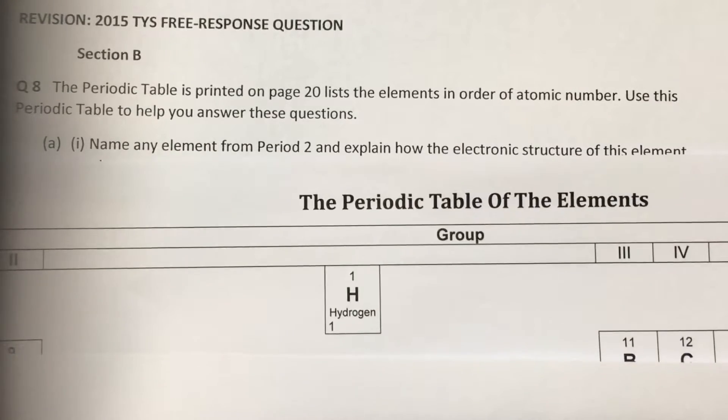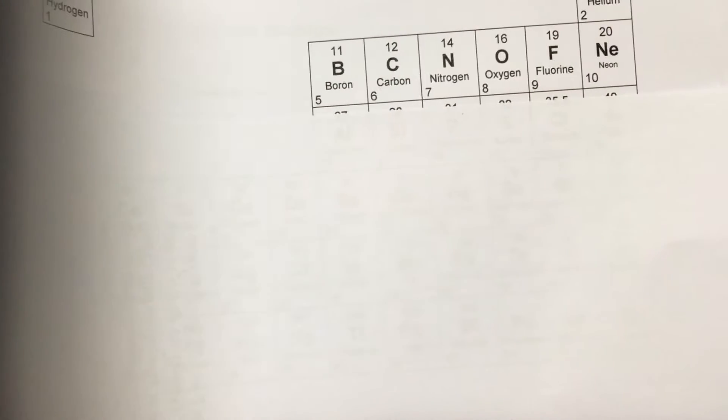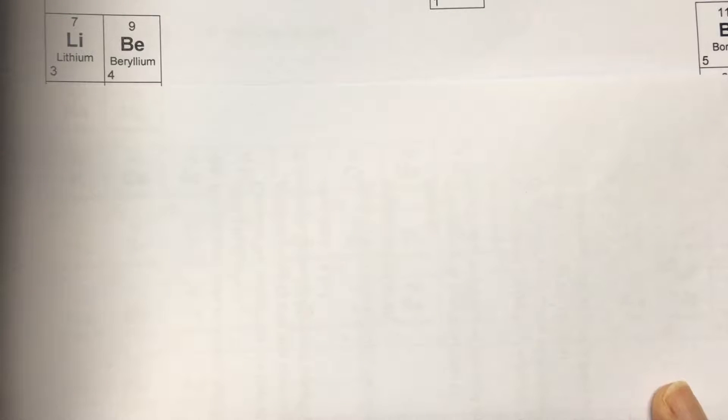So for this question, which is asking us from period 2, we just look and focus on the second period, namely from lithium across to neon. We look at first, therefore, your answer can be any one of these elements across.